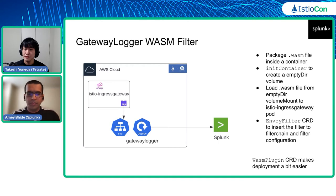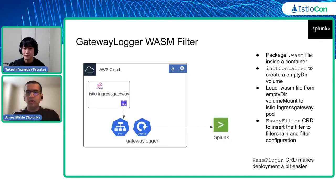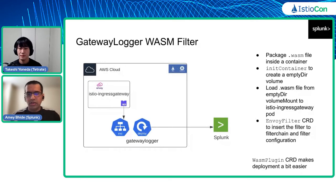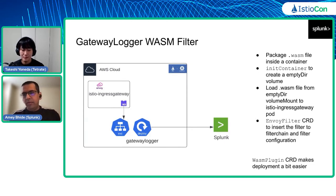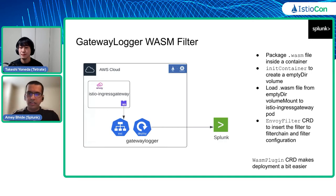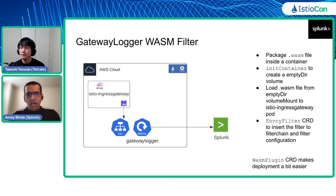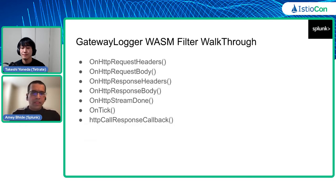We package the .wasm binary inside a container image. In Istio, we modified the Istio ingress deployment to add an init container that creates an empty directory and makes the binary available via a volume mount. We then use the EnvoyFilter CRD available in Istio to insert this WASM filter in the filter chain. The filter also has some configuration specified in the EnvoyFilter CRD. In newer versions of Istio, the WasmPlugin CRD makes this deployment a bit easier, as Takeshi mentioned earlier.